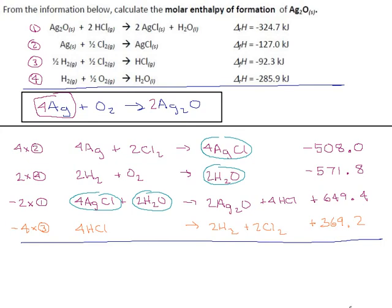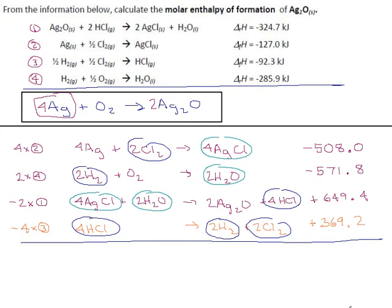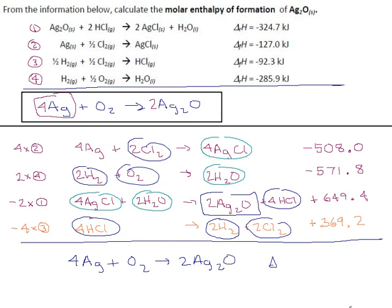Adding everything up: two hydrogen cancels, two chlorine cancels, four hydrogen chloride cancels. All that remains is four silver and an O₂ molecule producing two Ag₂O. The delta H is negative 508 minus 571.8 plus 649.4 plus 369.2, which gives us negative 61.2 kilojoules.